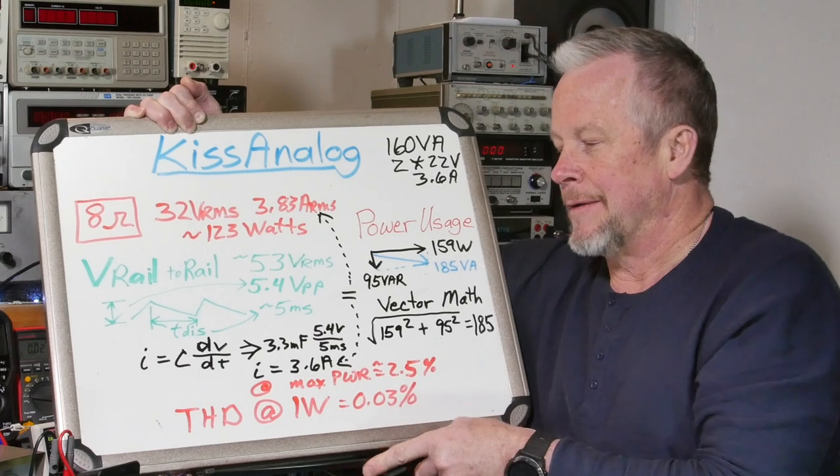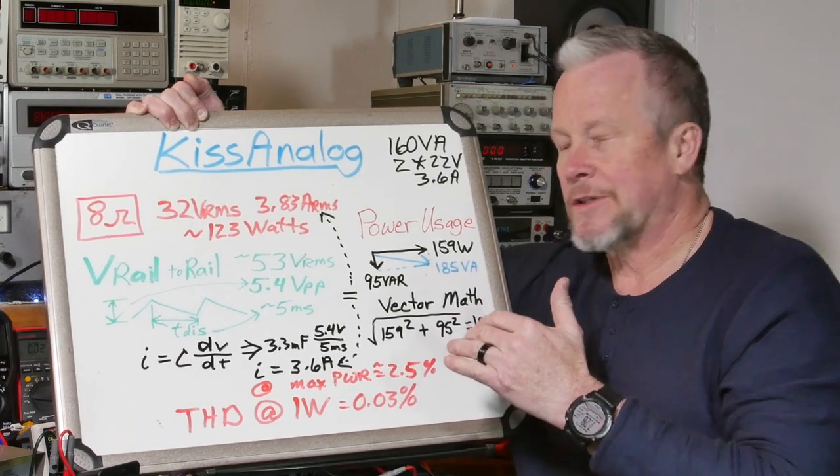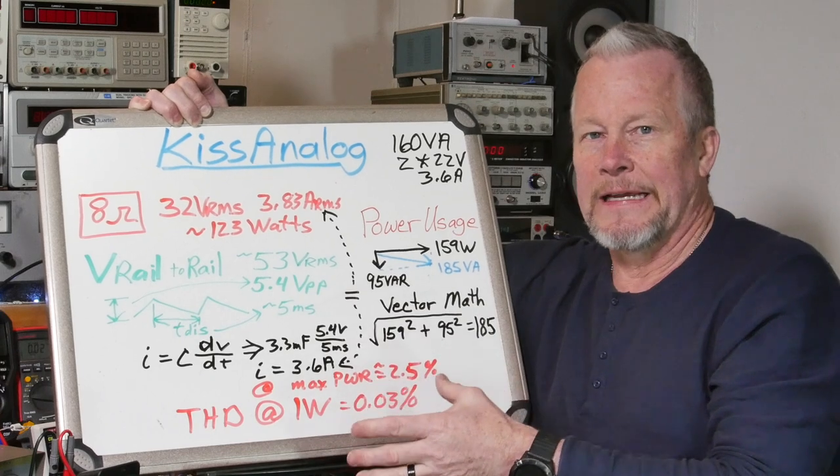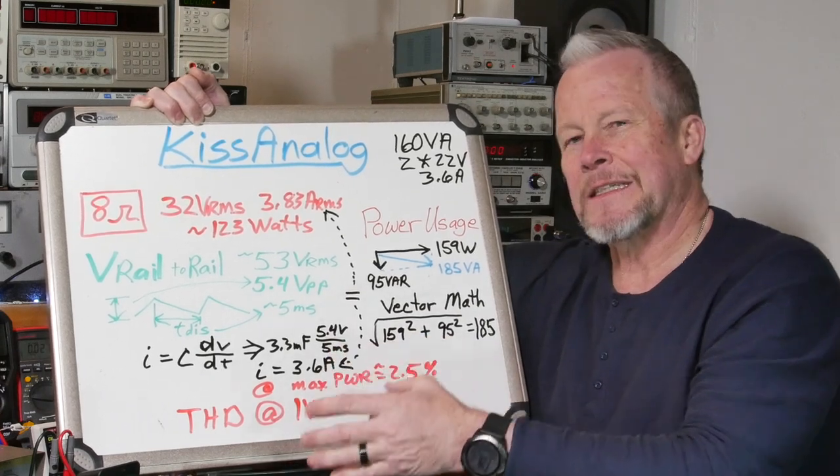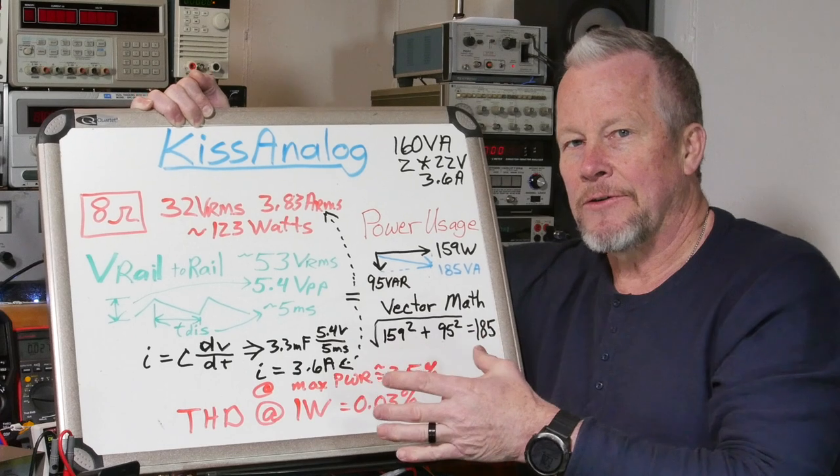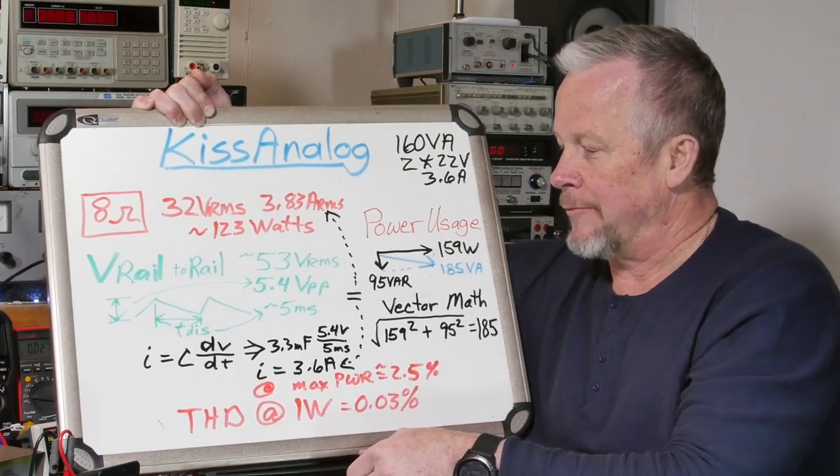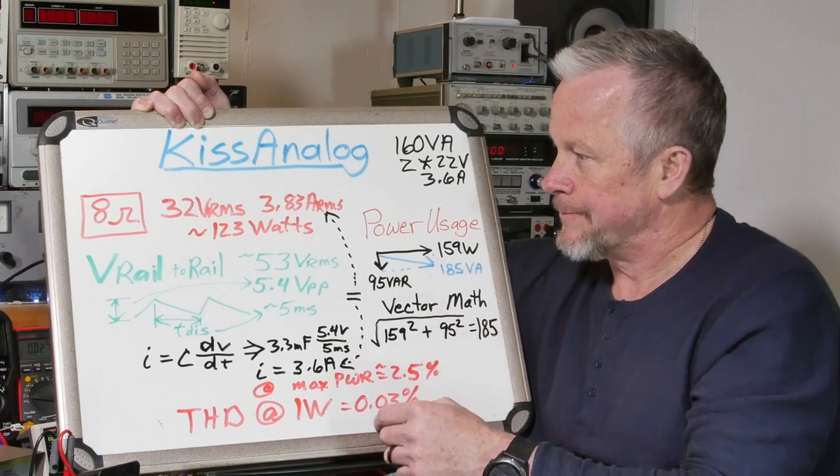Now, for real music versus a sine wave, it would be able to do that a lot easier, because music's not going to be a continuous power like this. But anyway, again, we've got to hook a second channel, right? Okay, so then I took the measurements on the scope of the rail across the bridge rectifier.